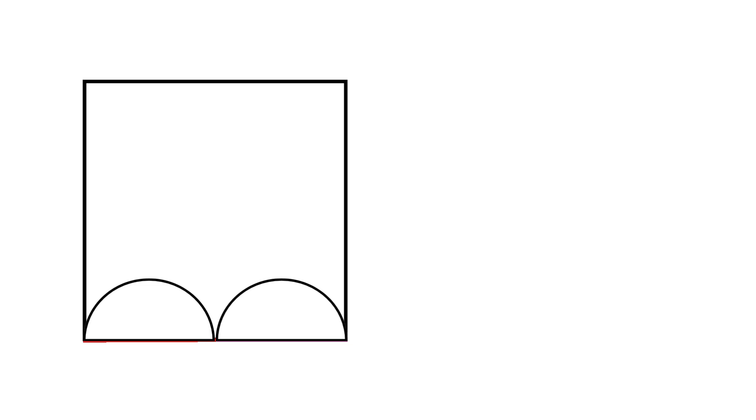Next, in the upper portion of the square we inscribe a large circle that satisfies these two conditions. First, it touches the top side of the square. Second, it touches both the bottom semicircles. Our question is, can we calculate the area of this large inscribed circle?